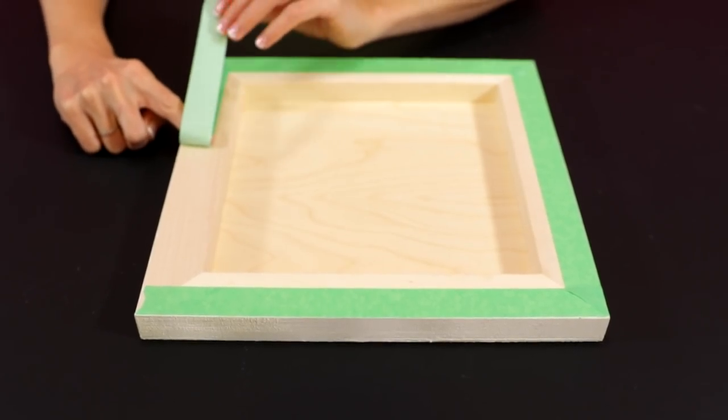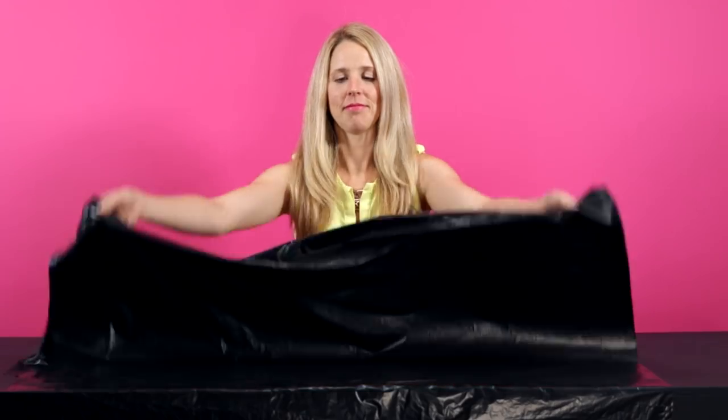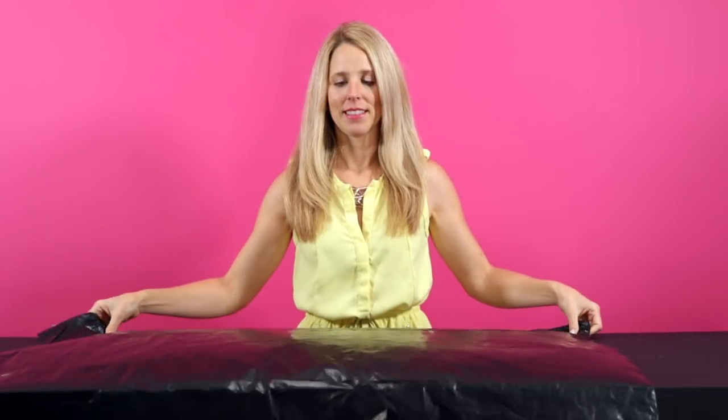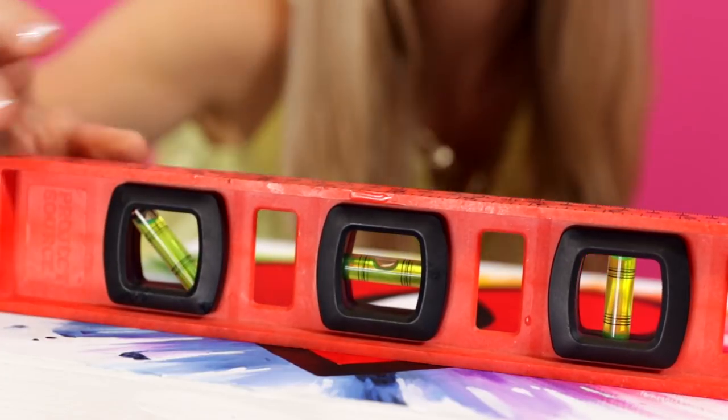If you plan to resin the sides of your piece, tape the underside of your artwork to catch any drips. Lay out a garbage bag on a flat surface. Prop your piece up on stands and make sure it's level.